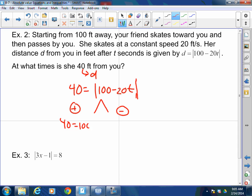My positive side is the mirror image. 40 = 100 - 20t. My negative side, I multiply the non-absolute value side by negative. So this becomes -40 = 100 - 20t.